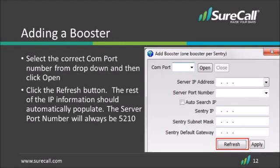Now you're ready to sync the Sentry unit with the Sentry software so that you can adjust and monitor your SureCall cellular signal booster. Log in to the Sentry dashboard and click the Add Booster button at the top left of the column. Click on the drop-down box for the correct COM port and click the Open button. Now click the Refresh button and the rest of the IP information should populate automatically.